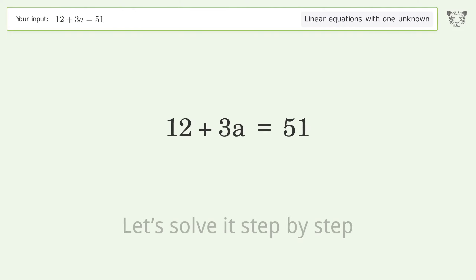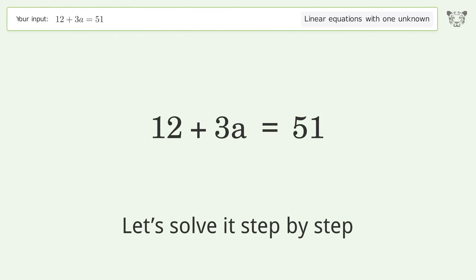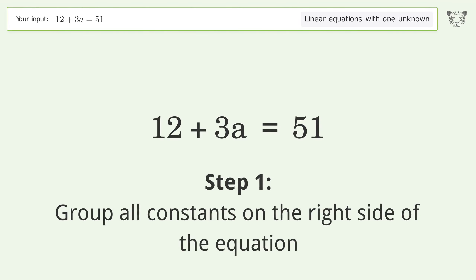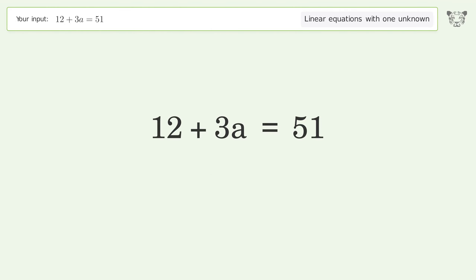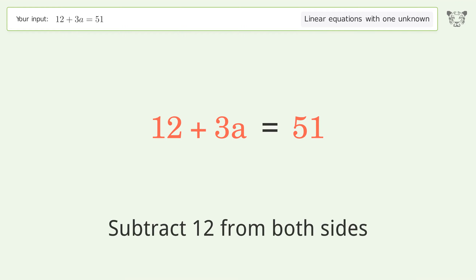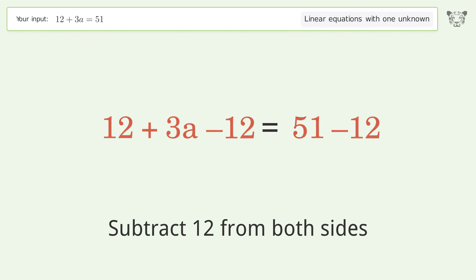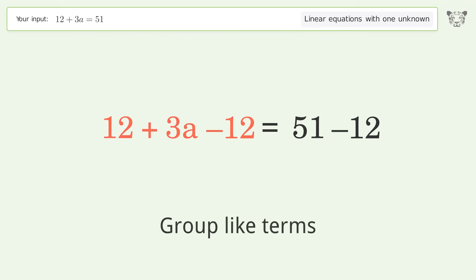Let's solve it step by step. Group all constants on the right side of the equation — subtract 12 from both sides. Then group like terms.